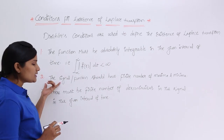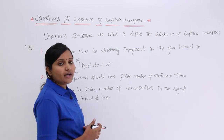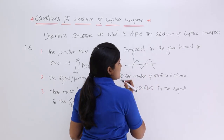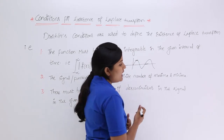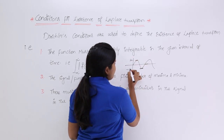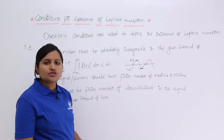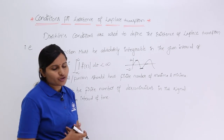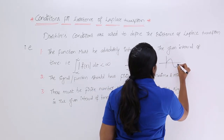The second Dirichlet condition is that the signal or function should have a finite number of maxima and minima. For example, consider a signal where the maximum amplitude is 2 volts and the minimum amplitude is minus 2 volts. So 2 volts is the maximum amplitude of your signal and minus 2 volts is the minimum amplitude of your signal.